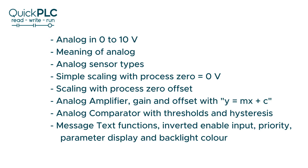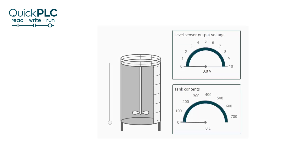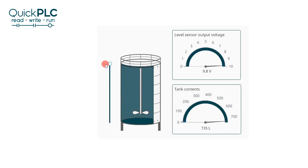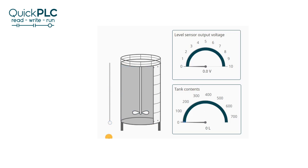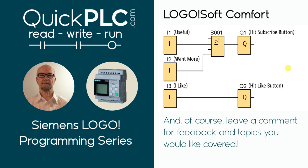To recap: we've looked at the analog inputs 0 to 10 volt, the meaning of analog, analog sensor types, simple scaling with process zero at 0 volts, scaling with an offset, the analog amplifier gain and offset using the y = mx + c equation, analog comparator with thresholds and hysteresis, and message text functions including inverted enable input, priority parameter, display, and backlight color. I hope it's been a worthwhile 15 minutes — as usual, if you have any requests, comments, or corrections please let me know in the comments, and like and subscribe.